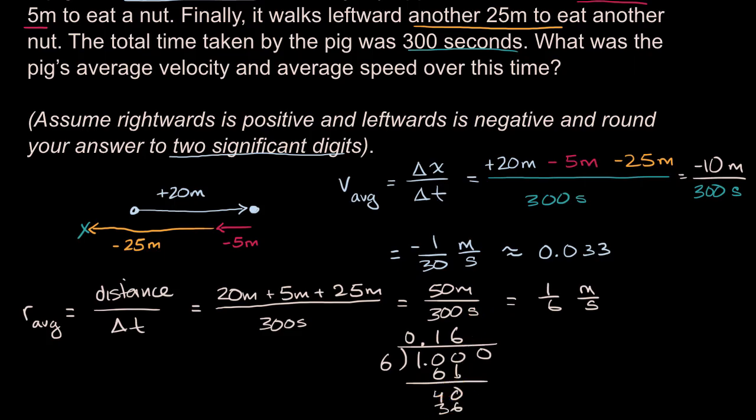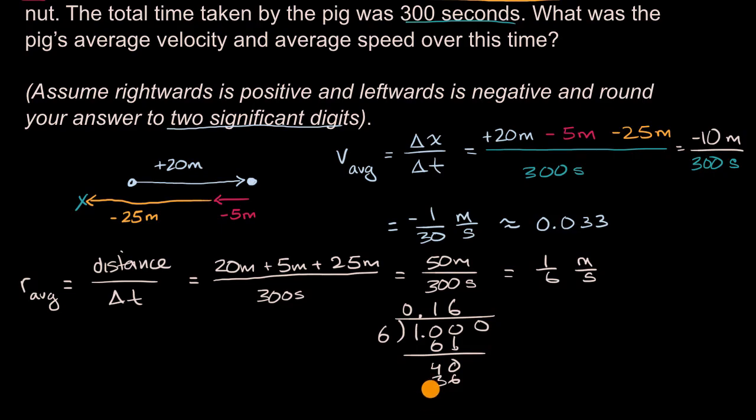And then we get another four. And then we're just going to keep getting sixes over here. So this is going to be approximately equal to 0.1 if we want two significant digits.